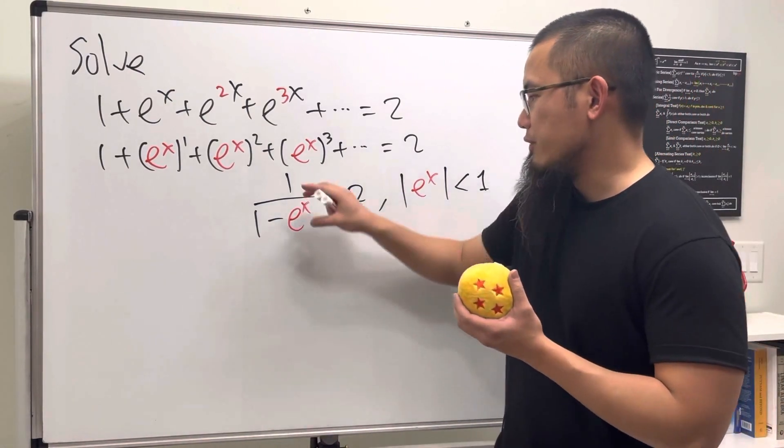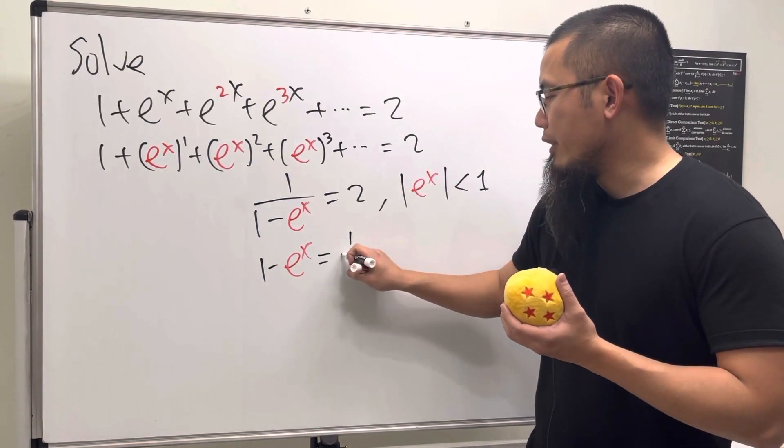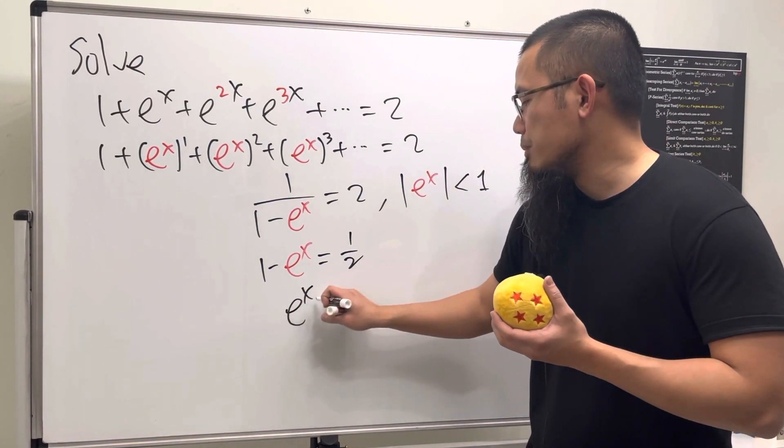It will be, check this out. Because if you do the reciprocal on both sides, we'll see that this right here, 1 minus e to the x, has to be equal to 1 half, and that means e to the x has to be equal to 1 half.